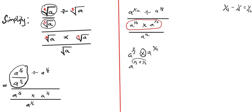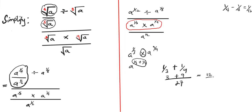Let's carry out this addition of fractions: one over three plus one over nine. The LCM is nine — one times three is three, plus one times nine is nine, giving three plus nine equals twelve over 27. Simplifying: three divides into twelve four times and into 27 nine times, so we get four over nine.